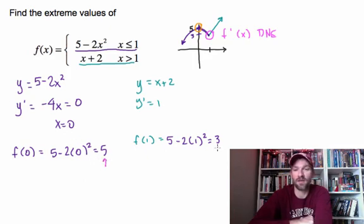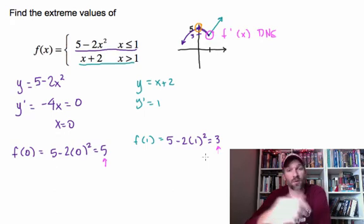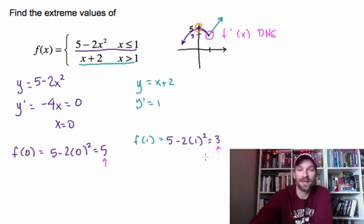And so what are the values that we're interested in here? Well, we're interested in the point 0. When x is 0, we get a max value of 5, and when the point is 1, we get a minimum value of 3. Those are the local extremes for this particular problem.